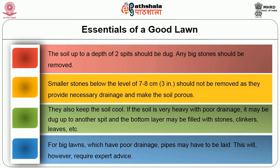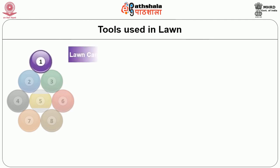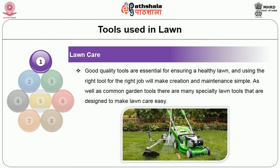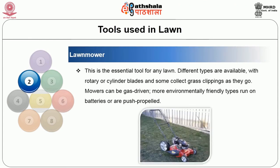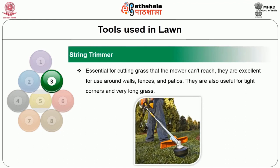Then tools used in lawn care. Good quality tools are essential for ensuring a healthy lawn, and using the right tool for the right job will make the creation and maintenance simple. As well as common garden tools, there are many specialty lawn tools designed to make lawn care easy. First is the lawn mower — the essential tool for any lawn. Different types are available with rotary or cylinder blades that collect grass clippings as they go. Mowers can be gas-driven, or the more environmentally friendly type running on batteries, or push propelled. Second is the string trimmer, essential for cutting grasses that the mower can't reach, excellent for use around walls, fences and passages, and useful for tight corners and very long grasses.